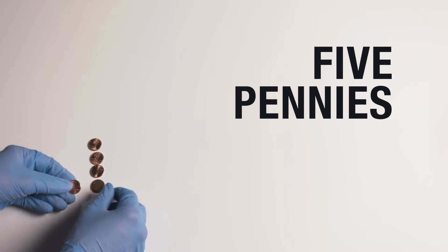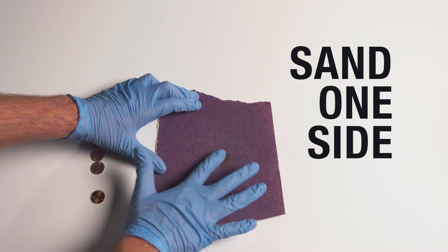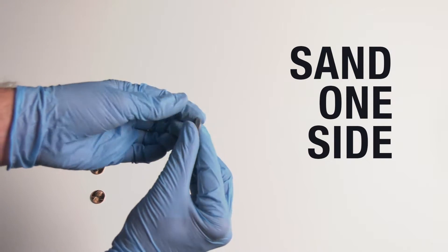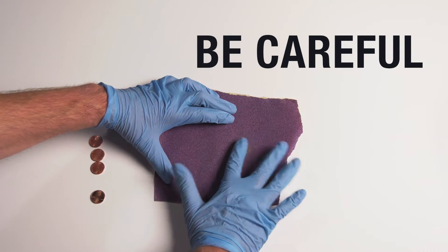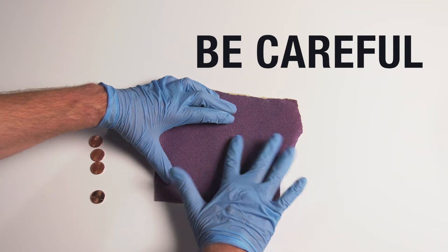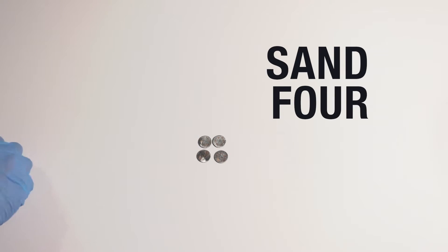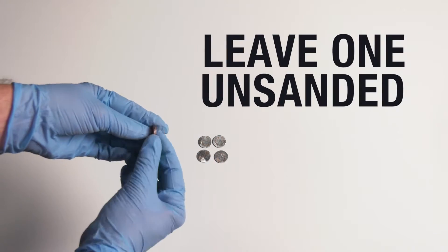Give each group a stack of five pennies. Have the student sand off the copper from one side of four of the pennies until all that is seen is the silver colored zinc. Remind students to do this carefully so they don't hurt their fingers. The goal is to have four pennies that are copper on one side and zinc on the other and a fifth penny that is copper on both sides.